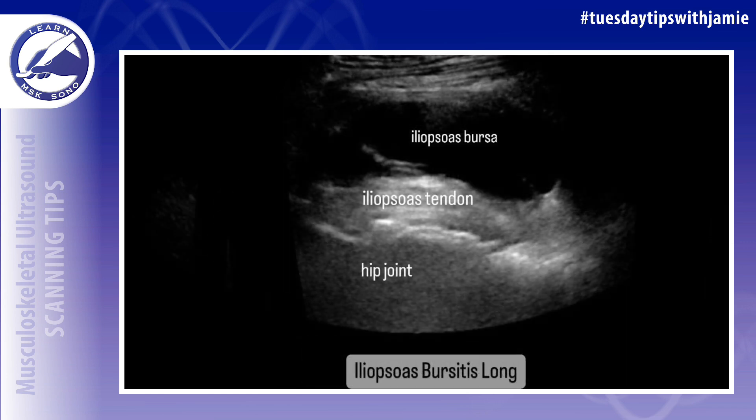When performing an MSK ultrasound exam of the anterior hip, the hip joint, iliopsoas tendon, and iliopsoas bursa should all be evaluated.